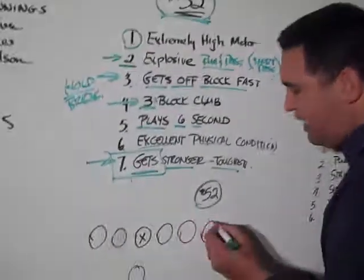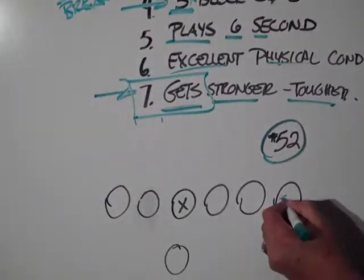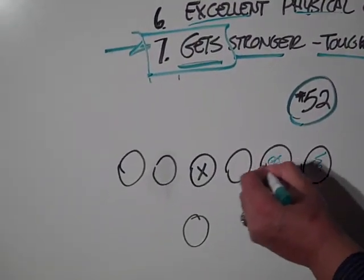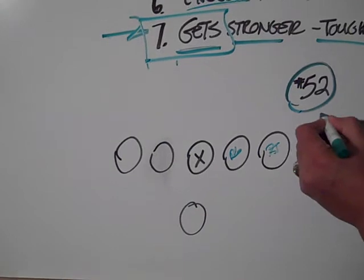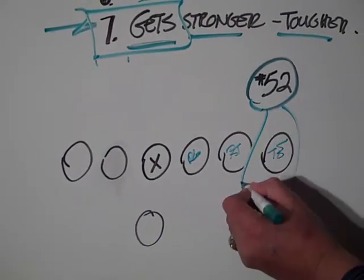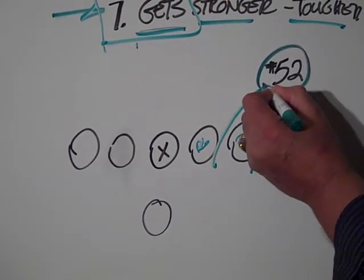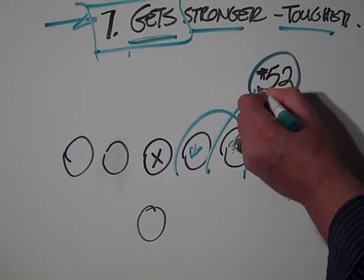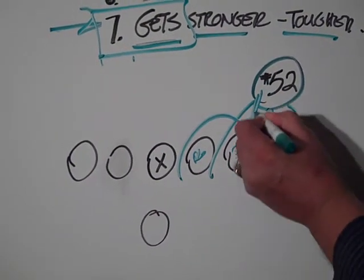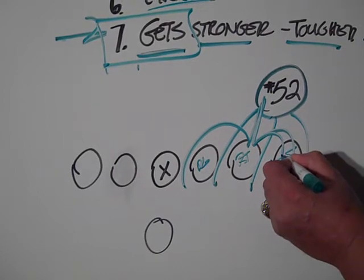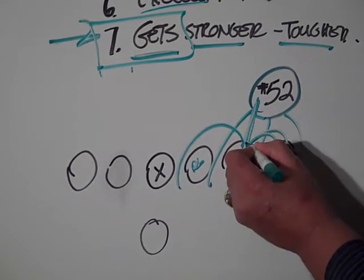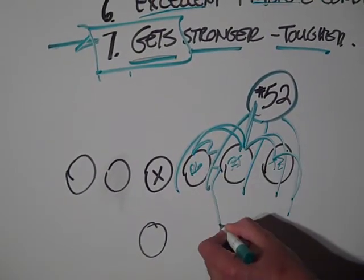So you can have Clay Matthews line up here, and here's a tight end, here's a right tackle, here's a right guard. He could come off the corner here, he could come here, he could come here. You could block him here and then he could spin off here. You could block him here, he could spin off there. You could block him here and he could spin off here. You could block him here, you could block him there, and he can cut through the crack.